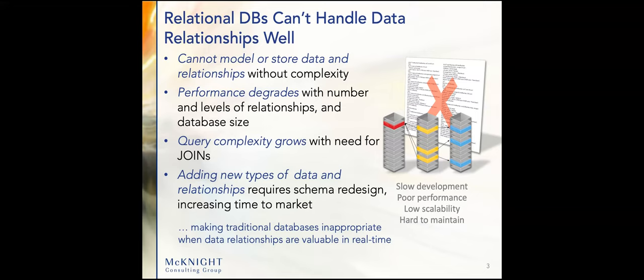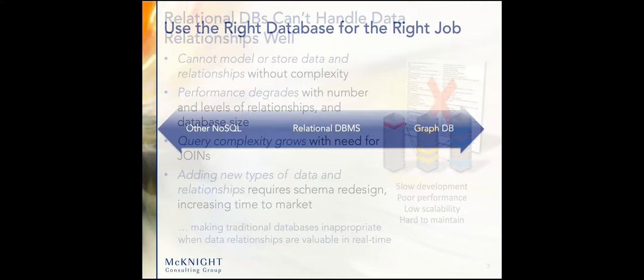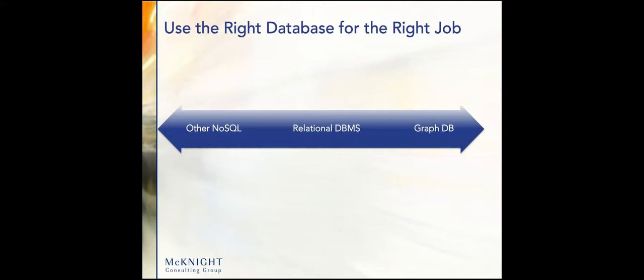Use the right database for the right job — this is basically a theme of advanced analytics. Over here on the graph side, the side we're focusing on today, it's connected data. That can mean a lot of things. It's focused on data relationships. And then discrete data or minimally connected data was good for other NoSQL databases — a column store, key value store, or a document store.